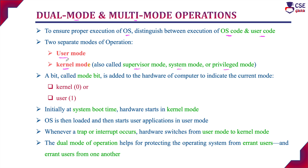In order to ensure protection, the operating system distinguishes between user mode and kernel mode using a mode bit, which is added to the hardware of the computer to indicate which mode the process is currently executing in. The mode bit for kernel mode is 0 and the mode bit for user mode is 1. Initially, when the system boots, the hardware starts in kernel mode — this is called the bootstrap program.